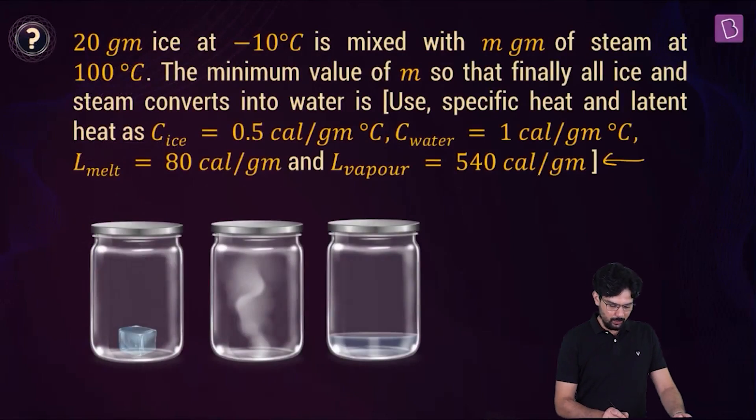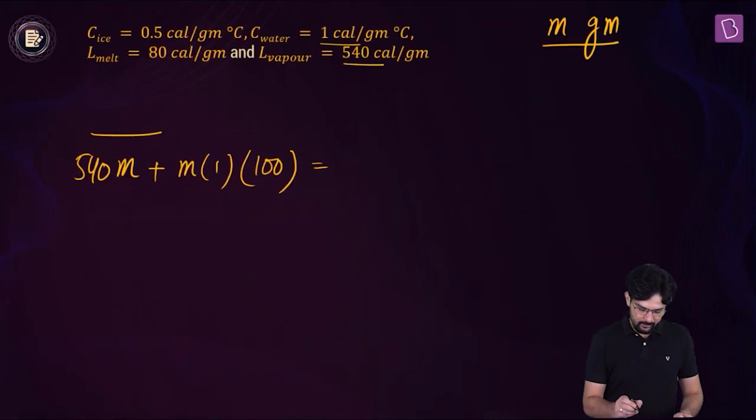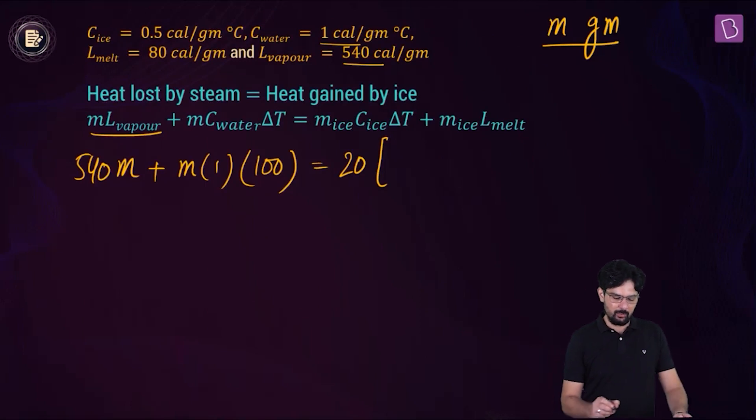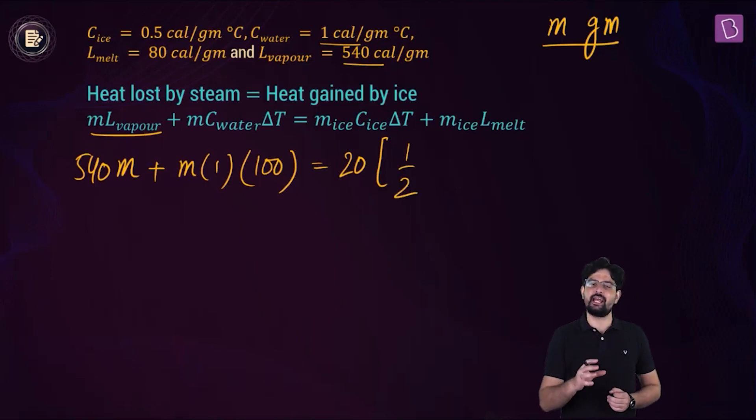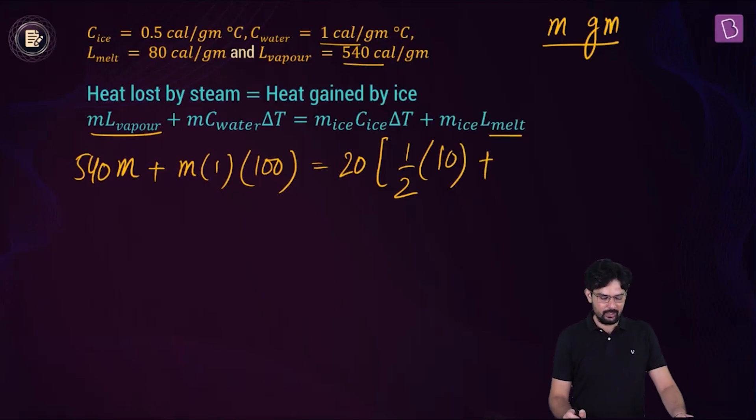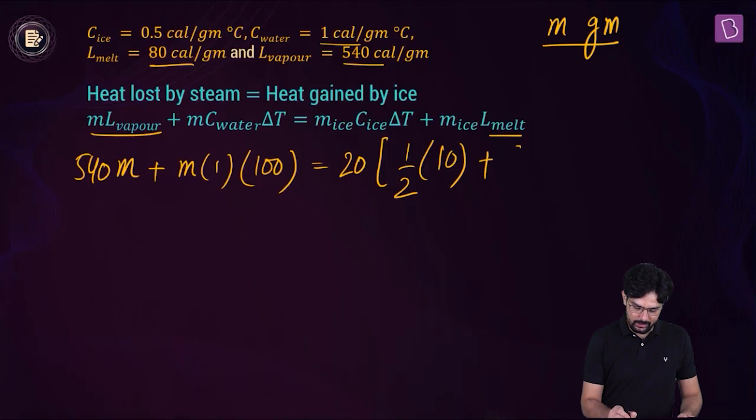The mass of ice is 20 gram. So we can take mass of ice common. What is the specific heat capacity of ice? So this is 0.5 or 1 by 2. So as ice at minus 10 degree Celsius is gaining heat and the temperature is increasing. Then when the ice comes to 0 degree Celsius, this is the heat required. So this is going to be half into 10 plus the latent heat of melting L_melt which is 80. And we are done. So we just have to simplify this out.